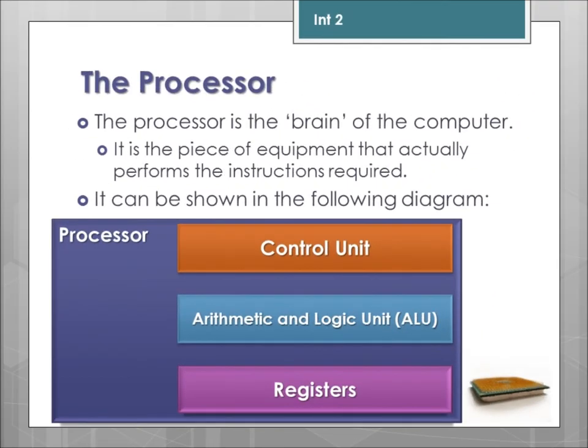The processor is really the brain of the computer. It is a piece of equipment that actually performs the instructions that the machine requires to do. This can be broken down into three main parts: the control unit, the ALU — which is the arithmetic and logic unit — and the registers.